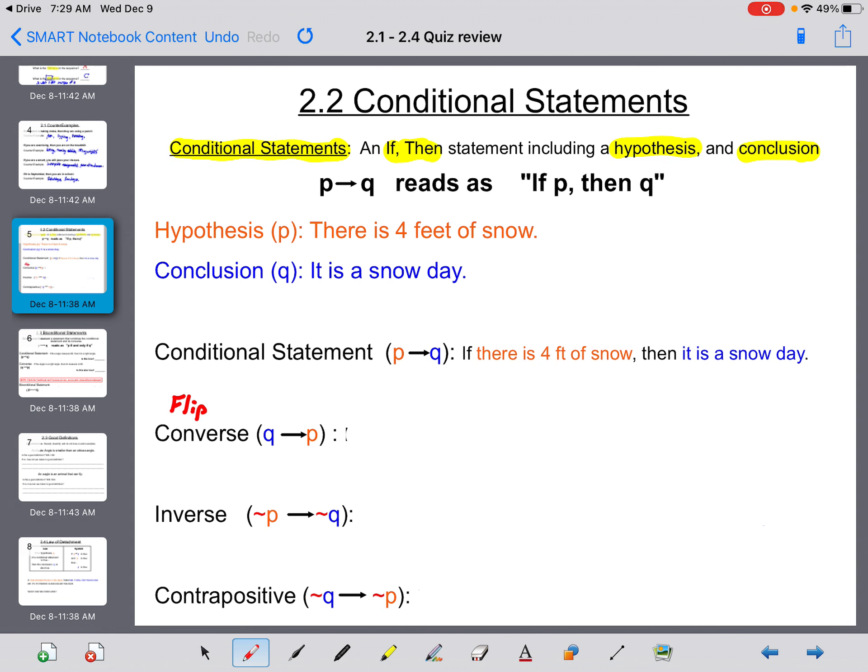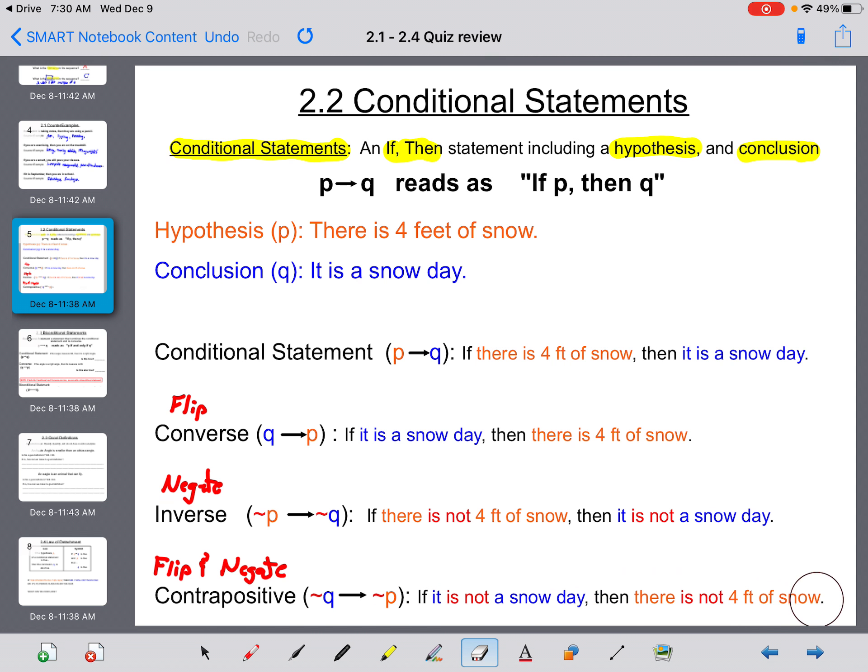Converse means to flip. Inverse means to negate. Contrapositive means to flip and negate. So your converse, you're flipping the conditional statement: if it is a snow day, then there is four feet of snow. Your inverse: if there is not four feet of snow, then it is not a snow day. Your contrapositive: if it is not a snow day, then there is not four feet of snow.